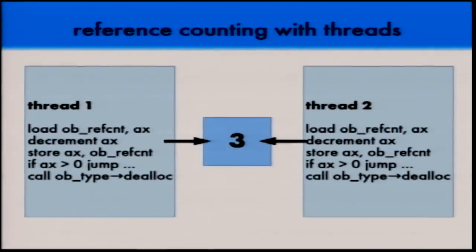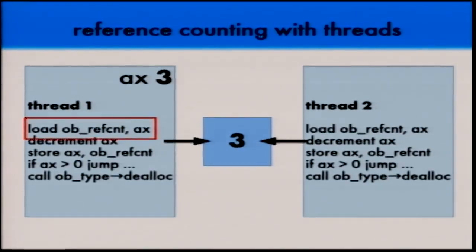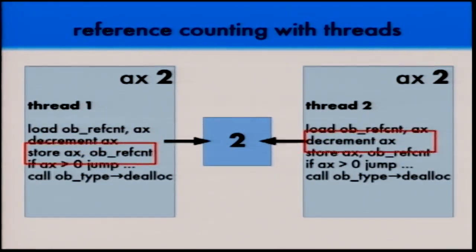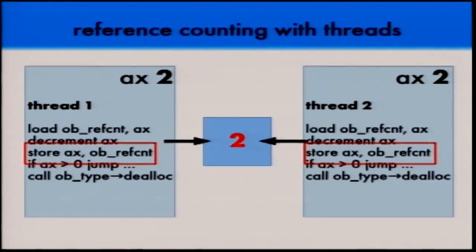Now let's do it again but in a different order. Thread one loads the count and sees three. Thread two loads it almost simultaneously — it also sees three. Thread one decrements, so does thread two. Thread one stores, so does thread two — but both wrote the same value. Both threads dropped their references, so the count should have dropped from three to one, but it only drops to two. This is a bug — a race condition where both threads stepped on each other's feet.